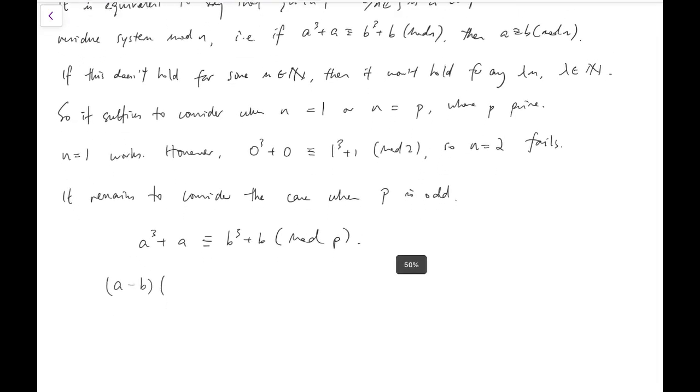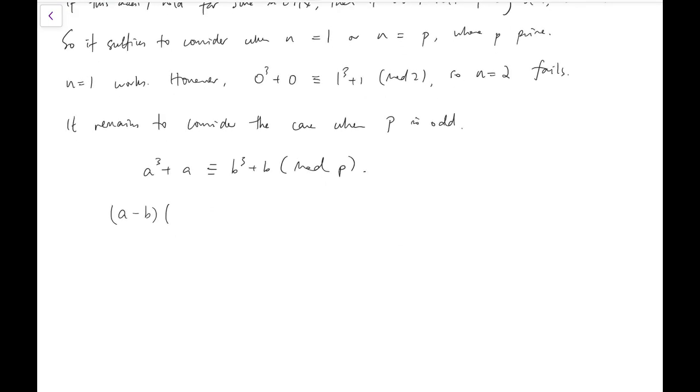So, a³ + a is congruent to b³ + b mod p. We've come this far to simply establish this equation. Now, I'm going to move everything to left-hand side and factorize. And it will become (a - b)(a² + ab + b² + 1) congruent to 0 mod p. Then, of course, we have a possibility to have a congruent to b mod p. Or, otherwise, a² + ab + b² + 1 is congruent to 0 mod p.